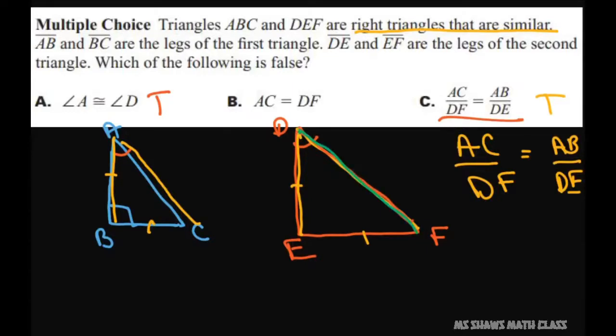All right, so because they're similar, they don't have to equal. So I could let this be three and my scale factor be two and this side be six. So this is false.